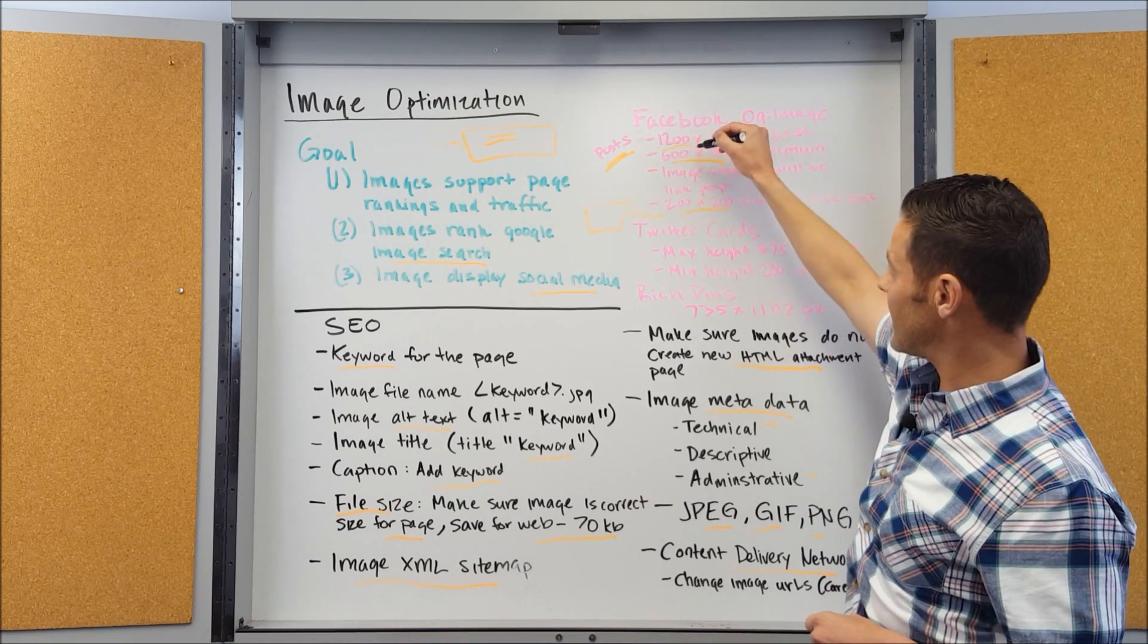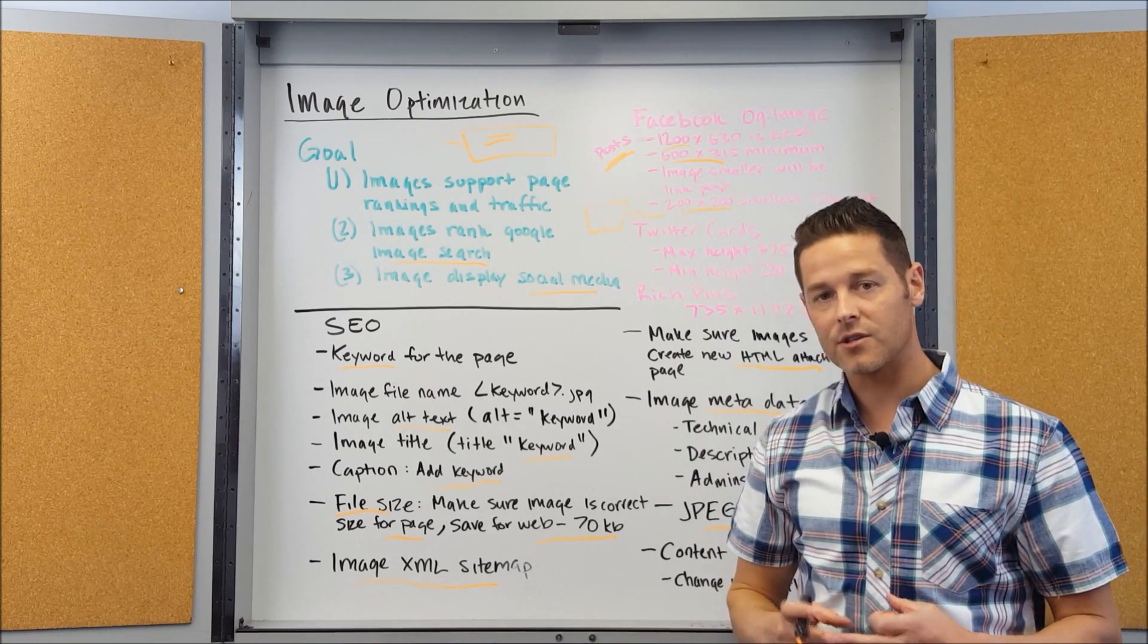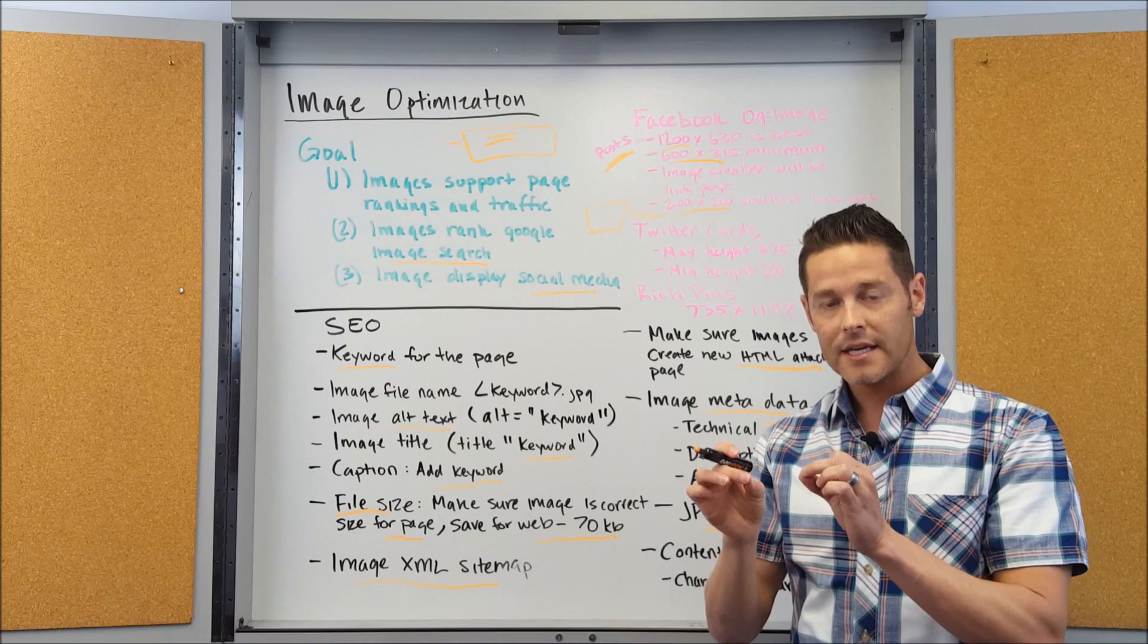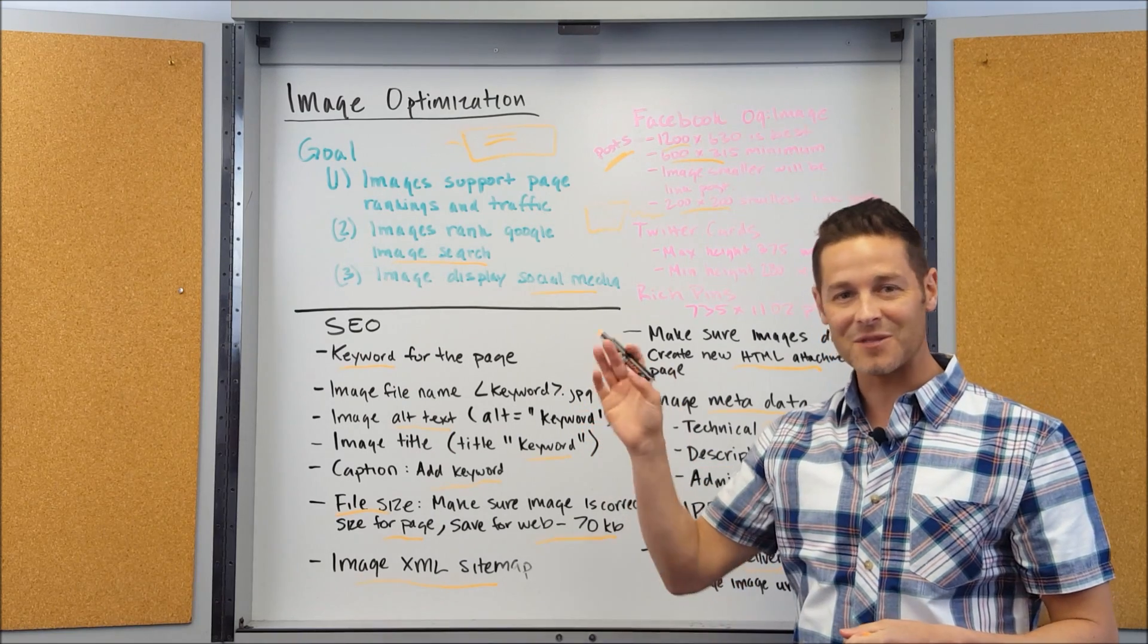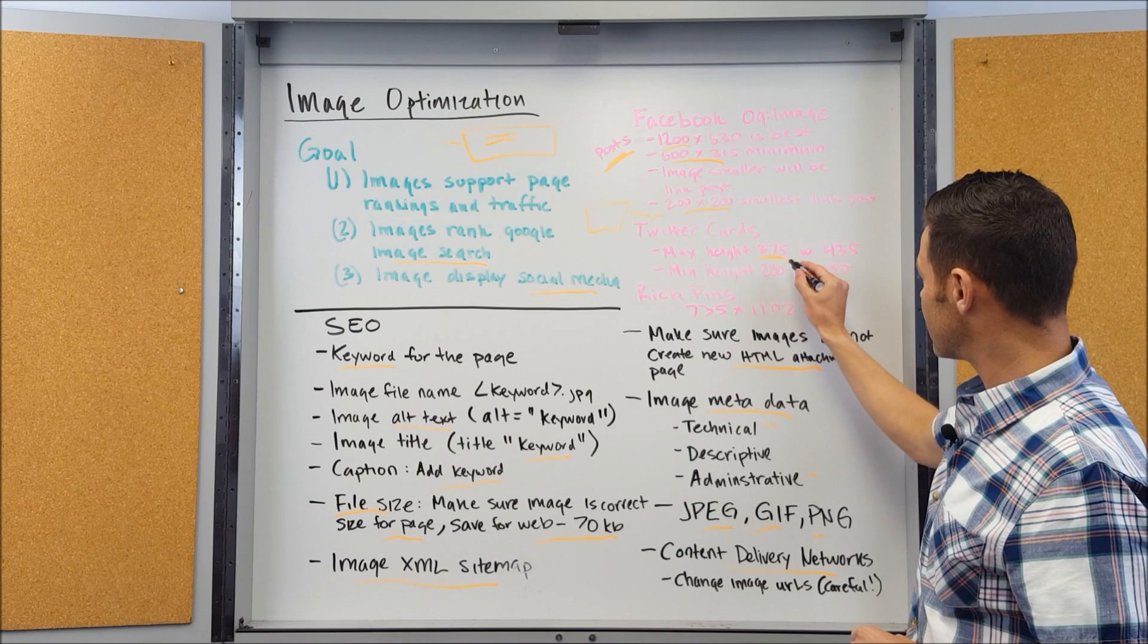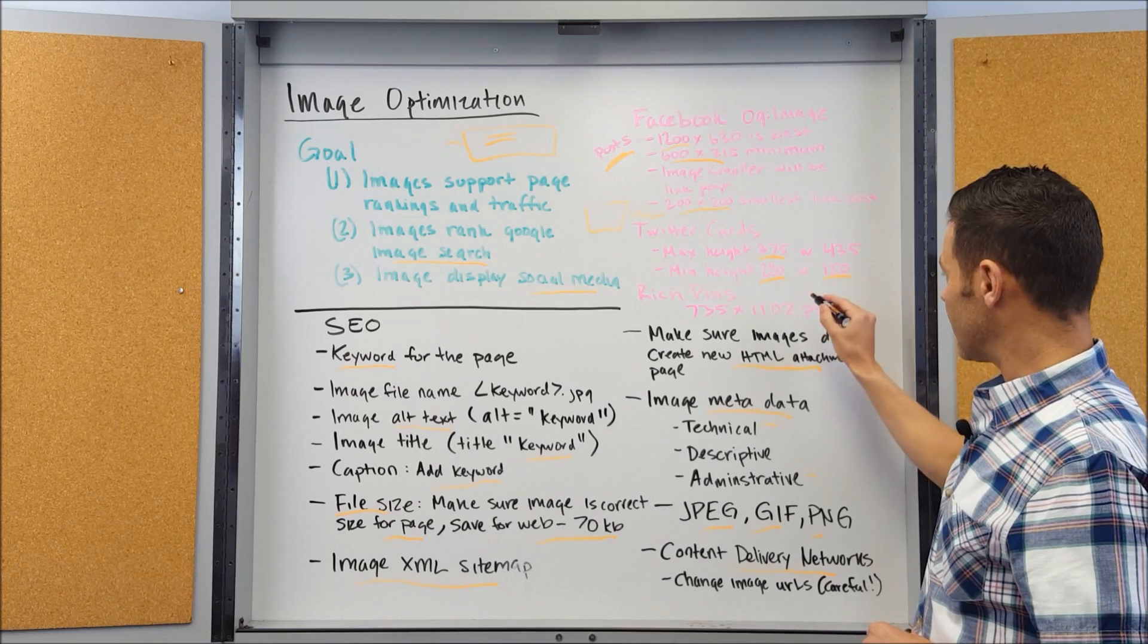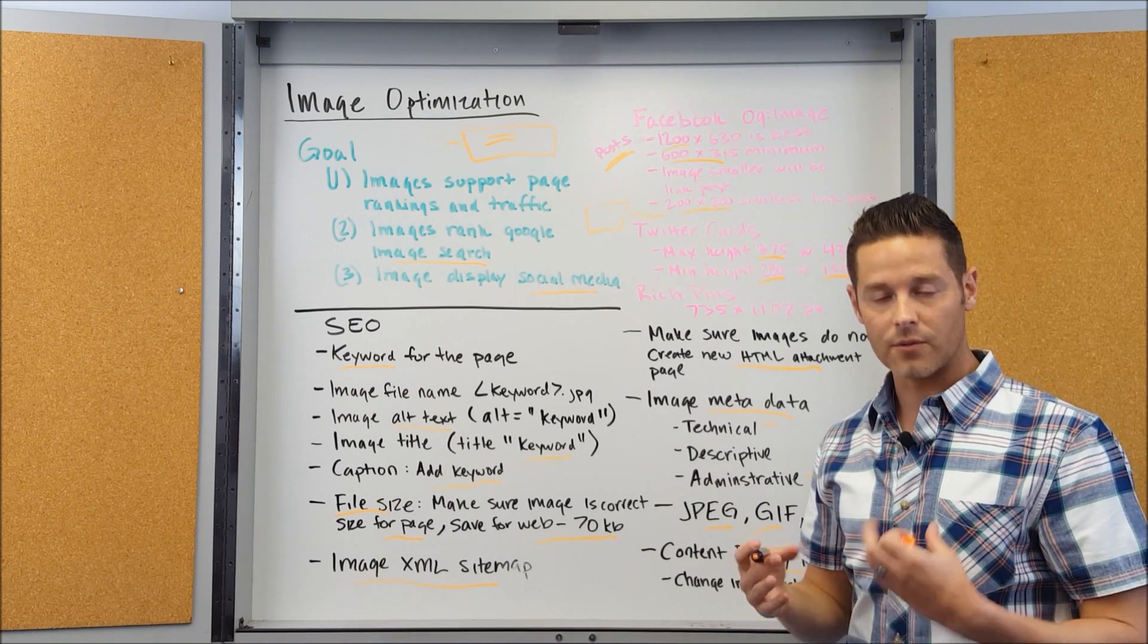There's also something called Twitter cards. There's a whole bunch of different types of Twitter cards. The one we're focusing on here is the photo Twitter card. Within the HTML of your page you can tell Twitter that this is the image you want to use. It will display that just like Facebook. This can be really helpful so that Twitter picks up the correct image. When it comes to Twitter, the maximum height is 375 by 435 wide, and the minimum is 280 high by 150 wide. That's for a Twitter card for photos specifically. There's different types of Twitter cards: summary Twitter cards, video Twitter cards, and we can talk about that more in another video.